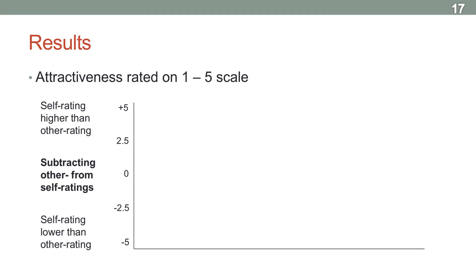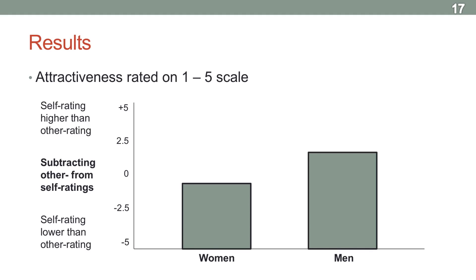Now let's say we ran the data and found that women on the whole were pretty accurate in how they viewed themselves — maybe viewing themselves a little more negatively than other people did. But men viewed themselves quite a bit more positively than other people did. This is actually based on real data. Women rate themselves a little more negatively than they probably should, whereas men tend to rate themselves a little better compared to other people's ratings.